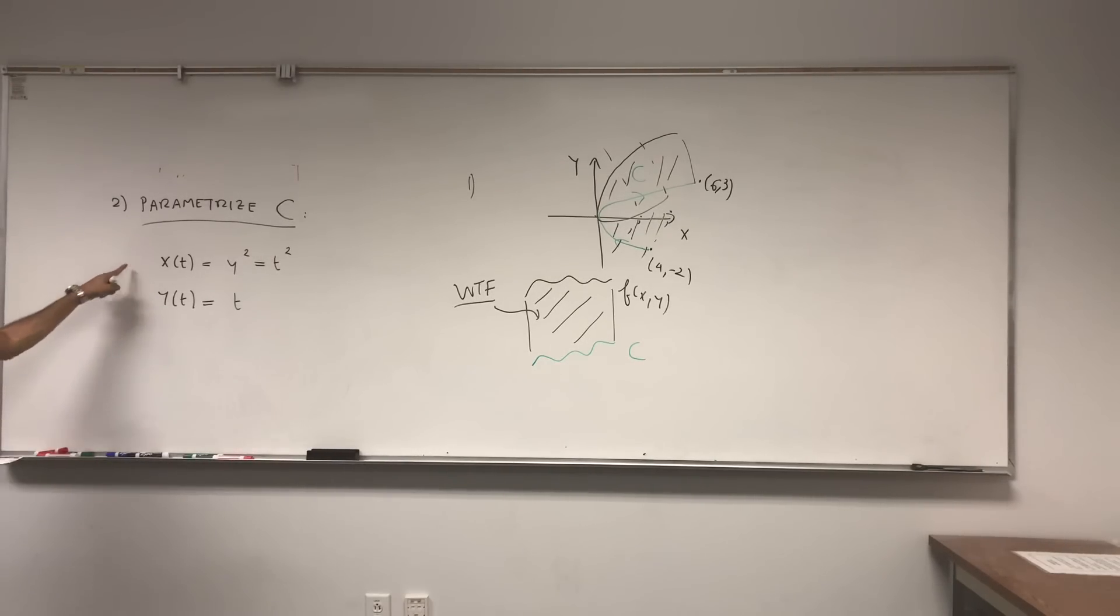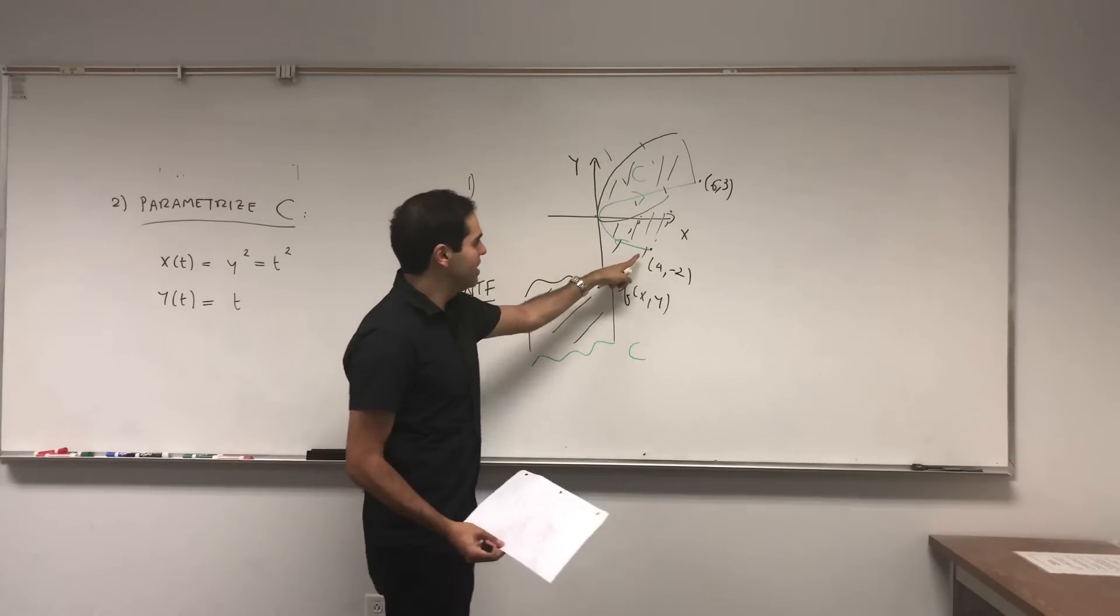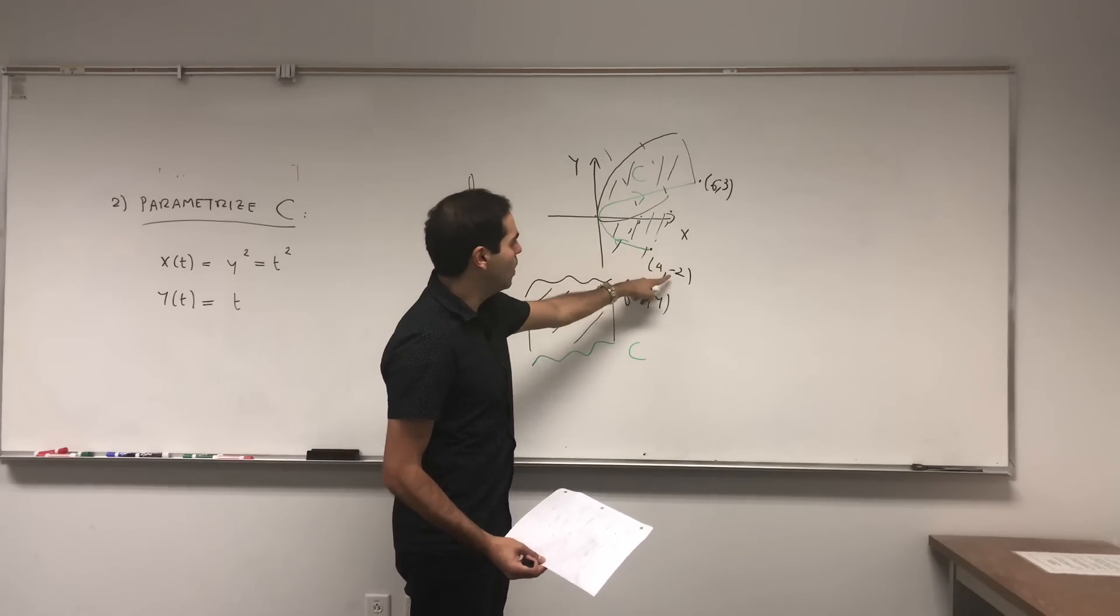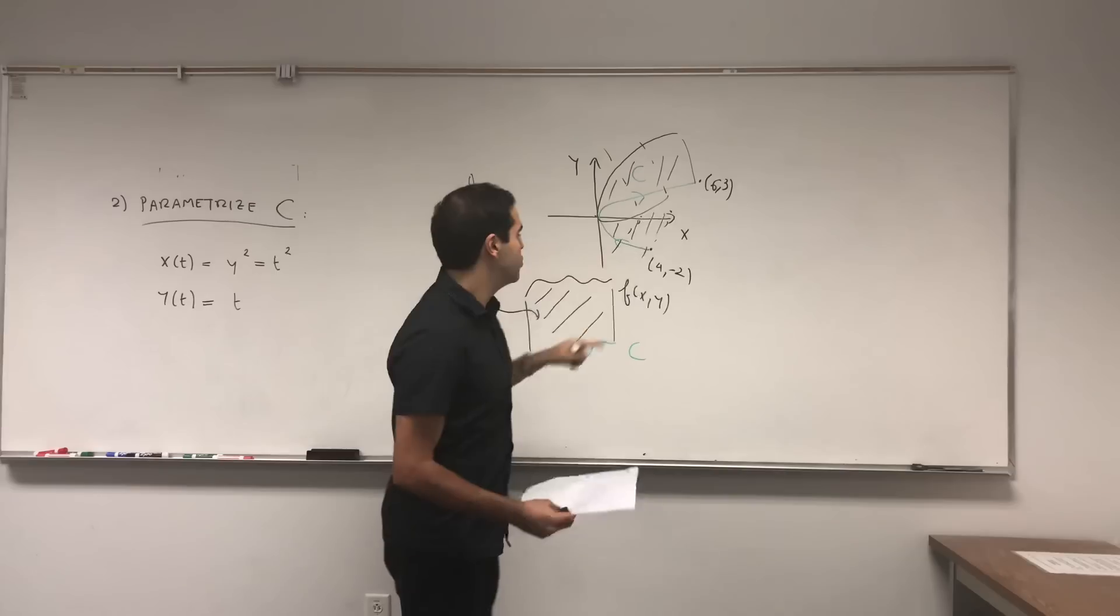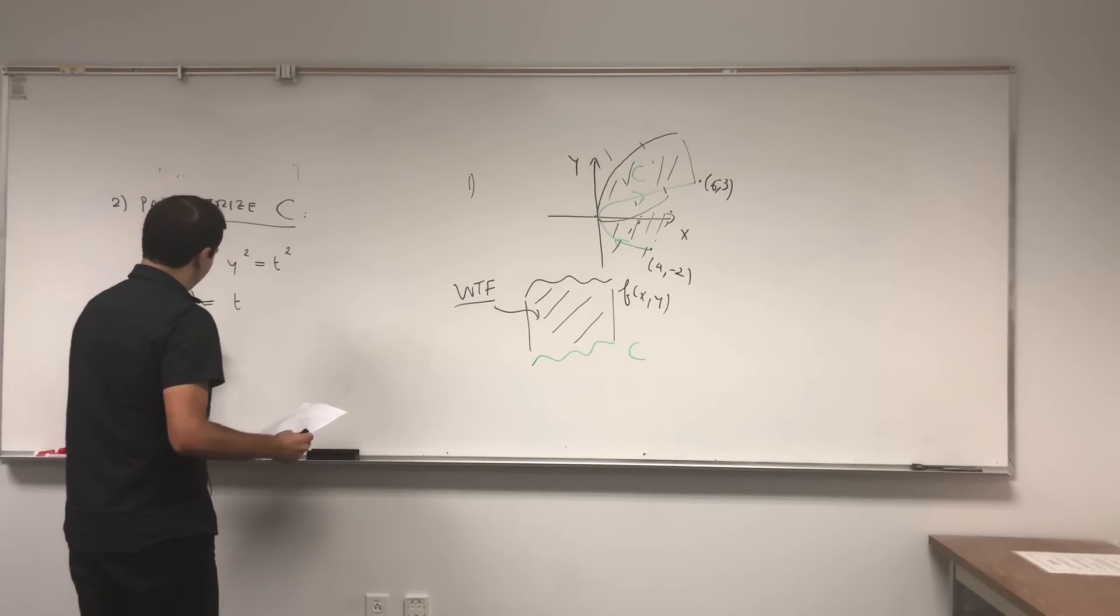That was the first thing, and remember for parametrizations you need a range. So here the question is, Y goes from what to what? Well, it goes from minus 2 to 3, so minus 2 to 3.